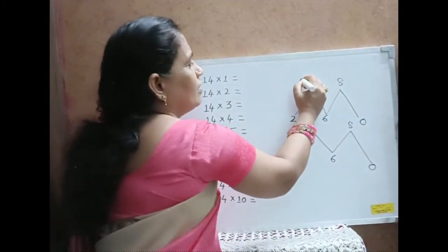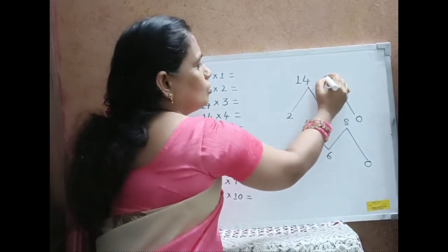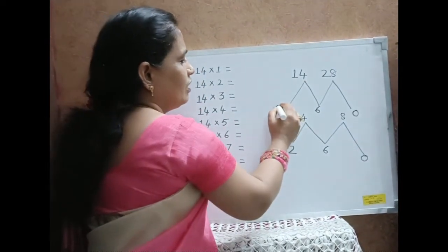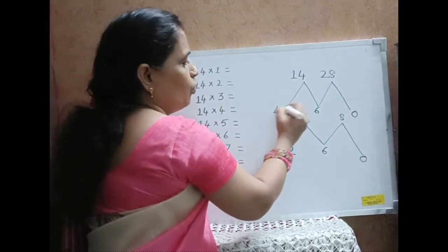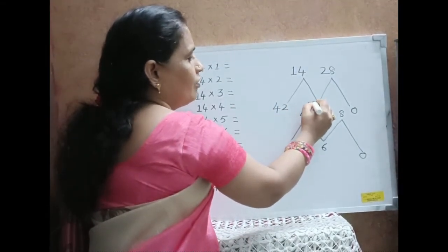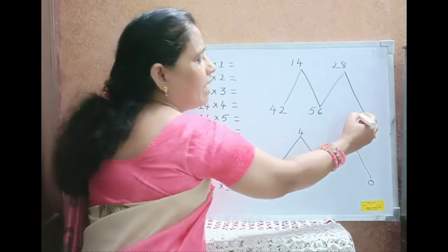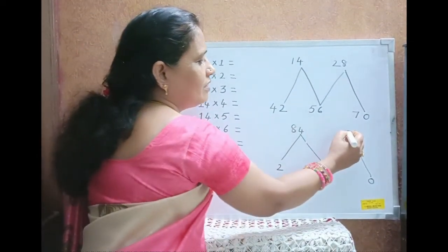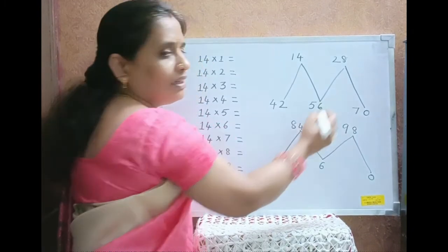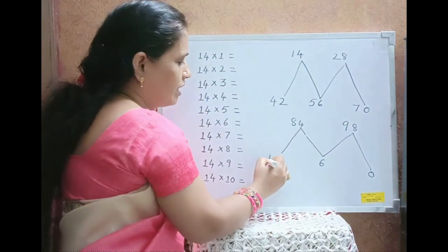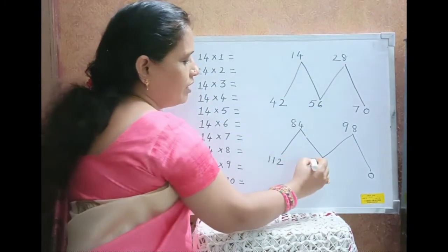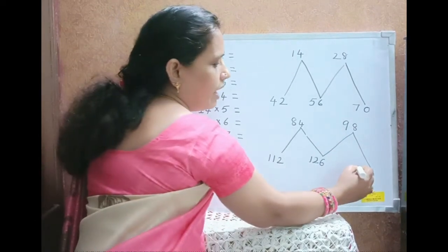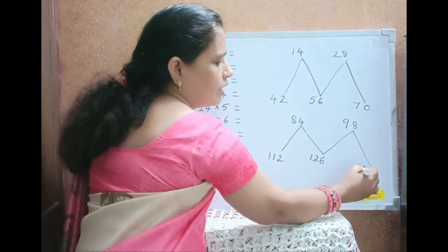For the tens digit, write 1, 2, skip 3 and write 4, 5, skip 6 and write 7, 8, 9, skip 10 and write 11, 12, then skip 13 and write 14.